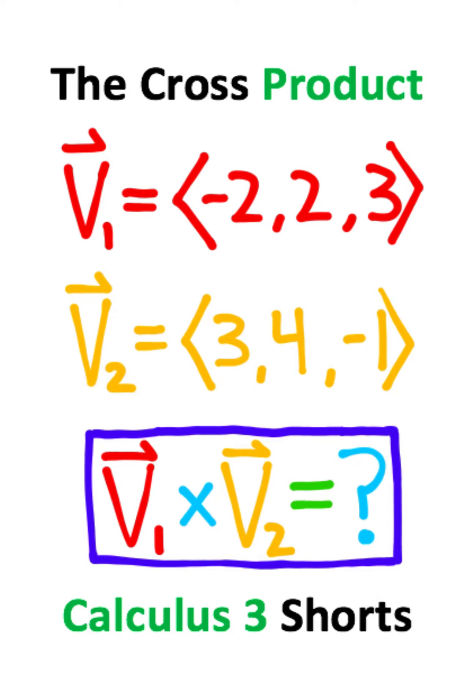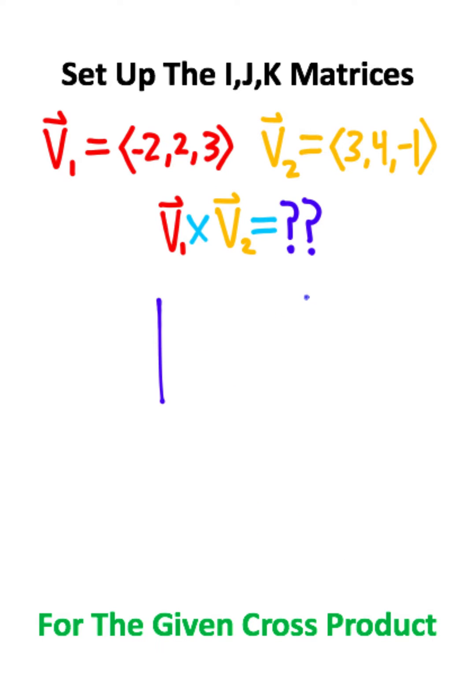I am going to show you how to set up a cross product in Calculus 3. To start this off, you want to create a big matrix where you have an i, a j, and a k.